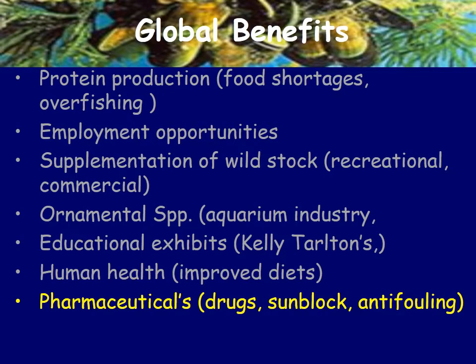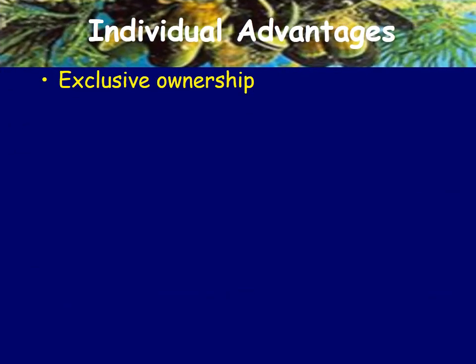Those are the global advantages, but what about for an individual? If an individual on a small scale goes into aquaculture, they might have exclusive ownership of that stock. That gives them an advantage over the old tragedy of the commons model seen with publicly owned wild stocks.